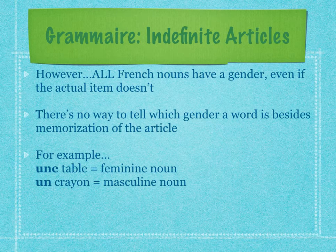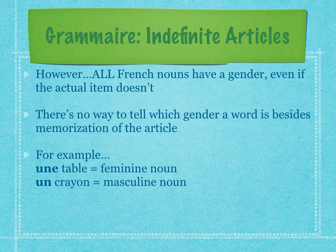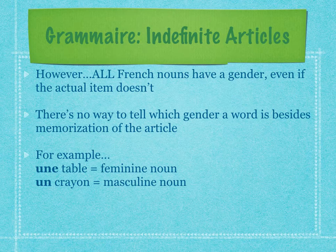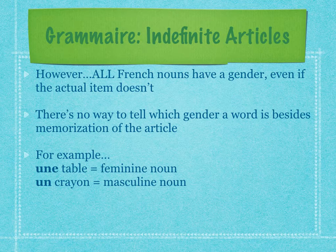But here's the thing — if you were paying attention to your vocabulary, you'd see that we use these articles with every single noun. For example, it's un crayon. Is a pencil a guy or a girl? Biologically, it's neither. But in French, it's masculine because we say un crayon. Every single French noun has a gender, even if the actual item doesn't. It's just a function of the way French grammar works.